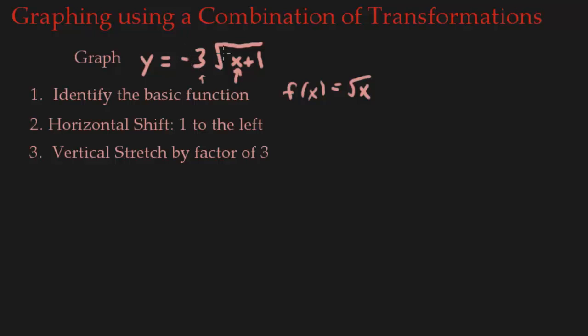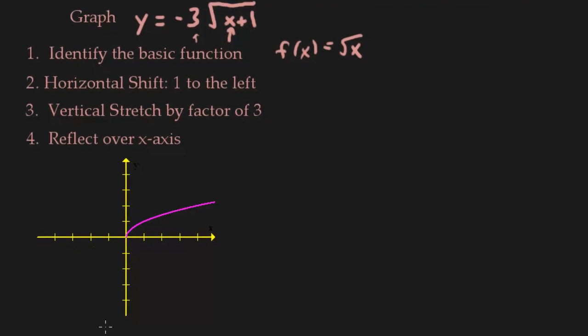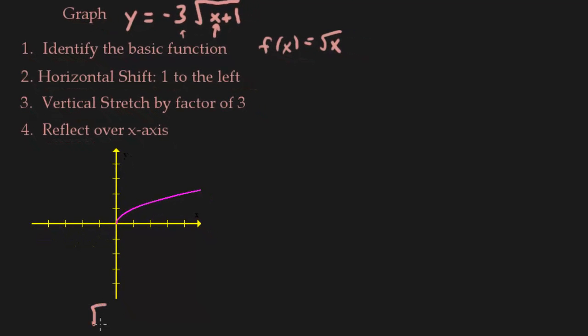Now the minus sign is outside the function, so our final transformation will be a reflection over the x-axis. So let's go ahead and do all of these now. Let's start with our basic function, the square root of x.